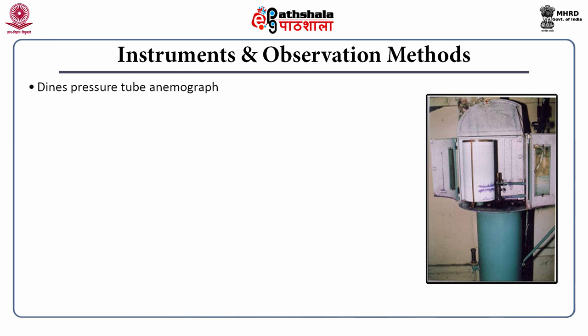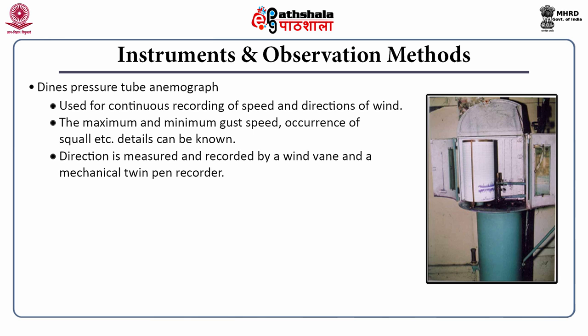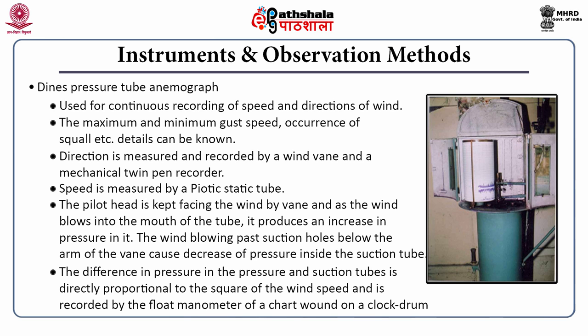Next is the Dines pressure tube anemograph, used for continuous recording of wind speed and direction. Details of wind structure can be known from this equipment, such as the occurrence and time of occurrence of maximum and minimum gust speed, and occurrence of squalls. The direction is measured and recorded by a wind vane and a mechanical twin-pen recorder. Wind speed is measured by a pitot-static tube. The difference in pressure in the pressure and suction tubes is directly proportional to the square of the wind speed, and is recorded by a float manometer on a chart wound on a clockwork drum.